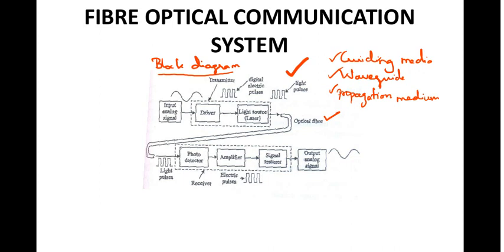The first block is the input analog signal — for example, a voice signal in telephone communication. It is fed into the transmitter, which has a driver circuit. The driver circuit converts the signal into digital electric pulses. These digital electric pulses are then converted into light pulses, which are fed into the optical fiber.